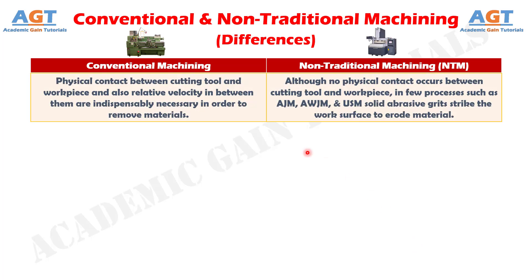Difference No. 5: In conventional machining, physical contact between cutting tool and workpiece and also relative velocity between them are indispensably necessary in order to remove materials, whereas in non-traditional machining, although no physical contact occurs between cutting tool and workpiece, in few processes such as abrasive jet machining, abrasive water jet machining, and ultrasonic machining, solid abrasive grit strike the work surface to erode material.